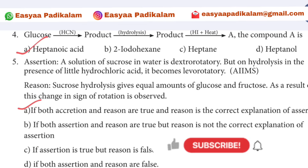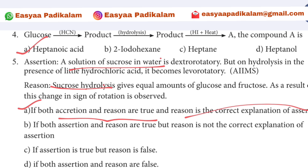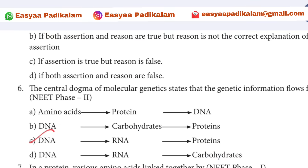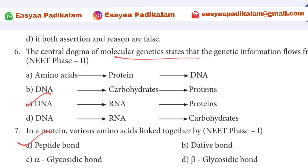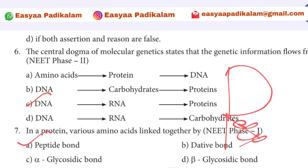Assertion-reason: Assertion is true, reason is correct. The central dogma of molecular genetics — we can choose DNA, RNA, protein. First we have D (DNA), then R (RNA), then P (protein). So the sequence is DNA → RNA → Protein.